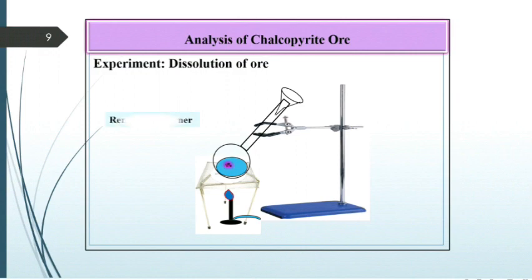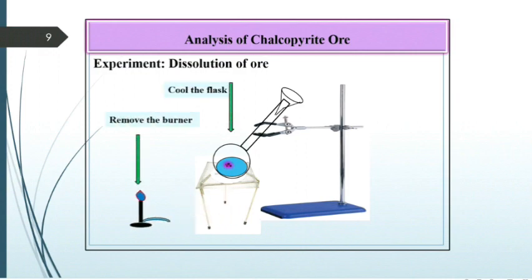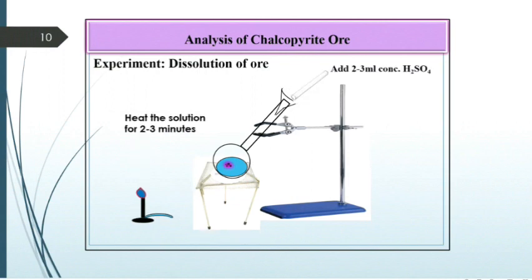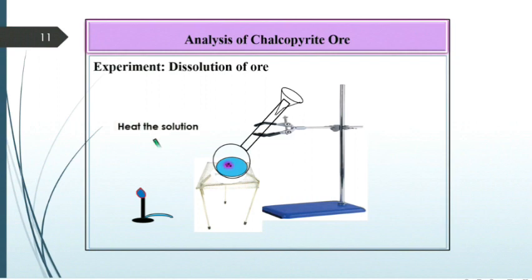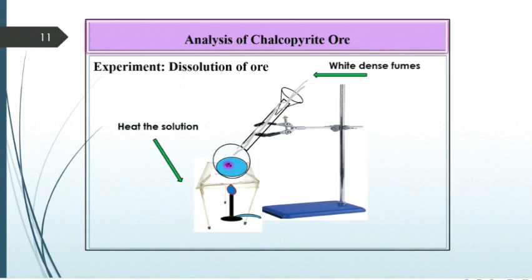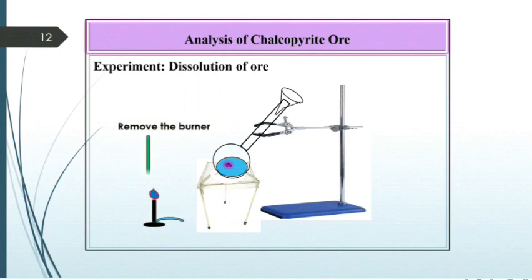Now remove the burner and cool the flask thoroughly, and to it add 2–3 ml concentrated H2SO4. Then heat the flask again till white fumes of SO3 start evolving. The H2SO4 added displaces the excess HNO3 and HCl, which are volatile. Further, the chloride or nitrate formed is converted to sulfate. Excess H2SO4 decomposes to evolve white fumes of SO3. Then remove the burner and cool the solution.